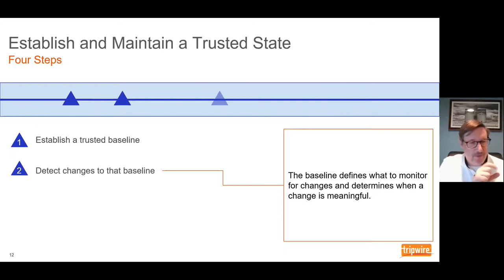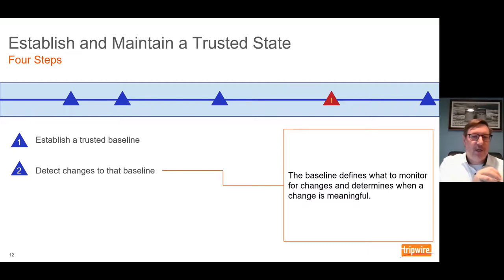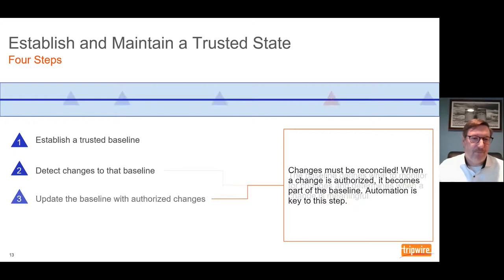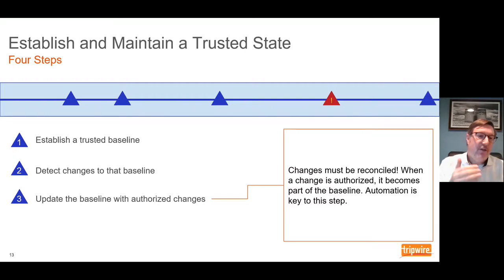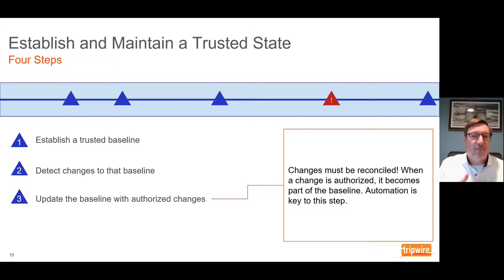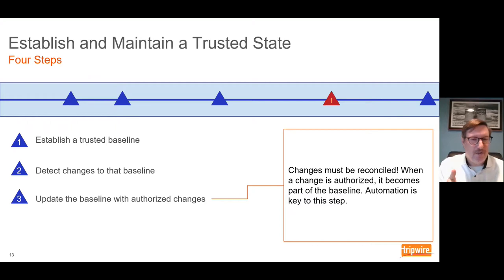The second step is to detect changes to that baseline — this is where change detection functionality fits into the overall process of integrity monitoring. The baseline defines what to monitor, and then you monitor those objects for changes. The baseline helps determine when those changes are meaningful to the organization. Once you're detecting changes against a baseline and you detect authorized changes, you want to update the baseline with those changes. Change data has to be reconciled to some kind of source to determine whether it's authorized or unauthorized, and then determine if it becomes part of the baseline. Automation is a key part of this step — if you're trying to manually reconcile changes in any large environment, you'll very quickly be overwhelmed.